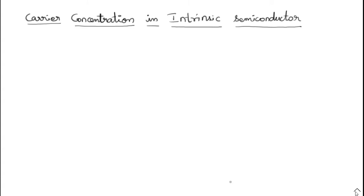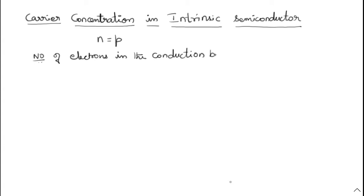As we know well, the number of electrons in the conduction band is equal to the number of holes in the valency band in the case of intrinsic semiconductor — both are equal. So N is equal to P. Why? Because this is the pure form of semiconductor, so no impurity is added. How many electrons jump from the valency band to the conduction band, that many holes will be present in the valency band.